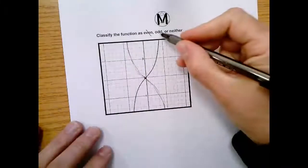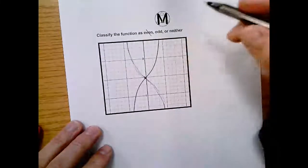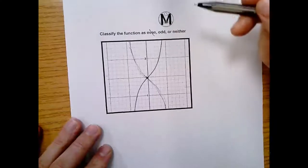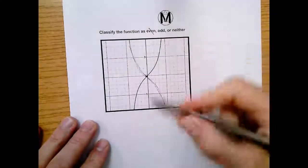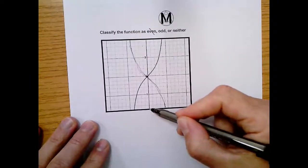But for something to be odd, for a function to be odd, it has to be symmetrical about the origin. And this function is not symmetrical about the origin because it doesn't touch the origin. You have to touch the origin.